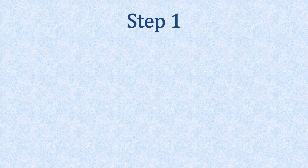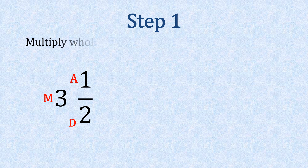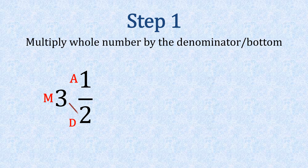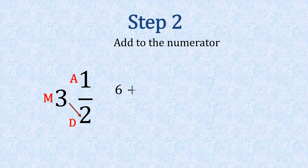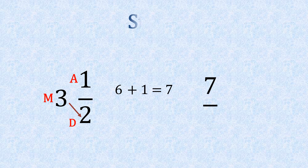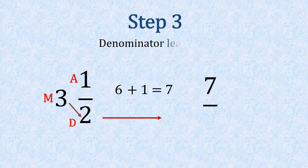Step one, we're using our M for MAD, so that's multiply. Three times two gives us six — put that on the top line. Then we're doing our A, which is add. So we add our numerator to the line: six plus one, giving us seven. Step three, the D for denominator — leave it down, just put it across there. And there's your answer: seven halves.